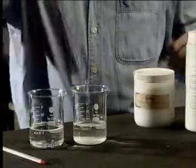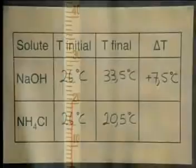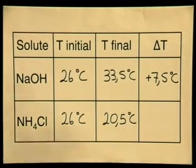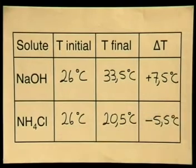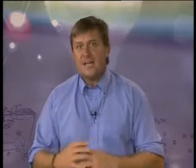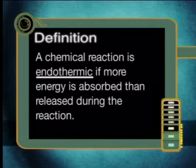We now add ammonium chloride to the water and stir the solution with a glass rod. The solute has all dissolved. The final temperature is 20.5 degrees Celsius, so the change in temperature is minus 5.5 degrees Celsius. Not all solutions release heat energy when they are formed. The temperature decreased because the solution absorbs energy from the surrounding environment. This is known as an endothermic reaction — a chemical reaction is endothermic if more energy is absorbed than released during the reaction. Endothermic reactions often require large amounts of heat to get started.